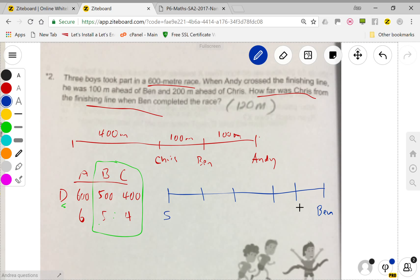By the time Ben starts from the starting point all the way to finish point, where do you think Chris is now? Where is Chris on the blue line?